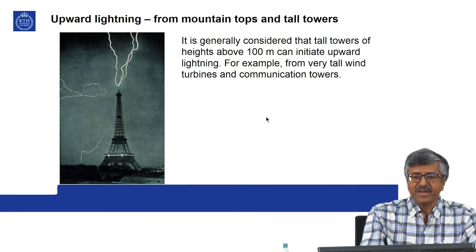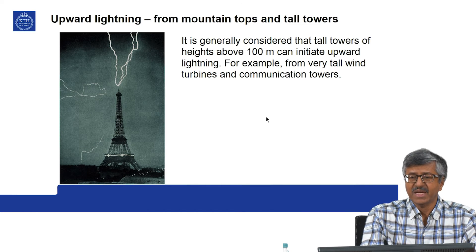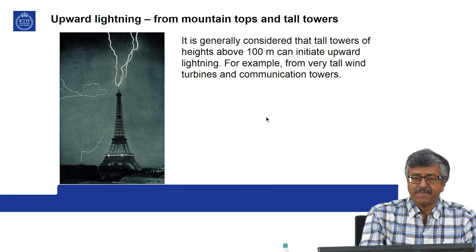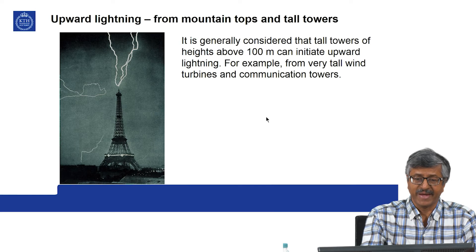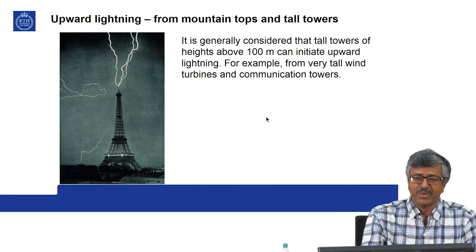Upward lightning from mountain tops and tall towers: it is generally considered that towers of heights above 100 meters can initiate upward lightning — for example, very tall wind turbines and communication towers. Below that height it is less likely.